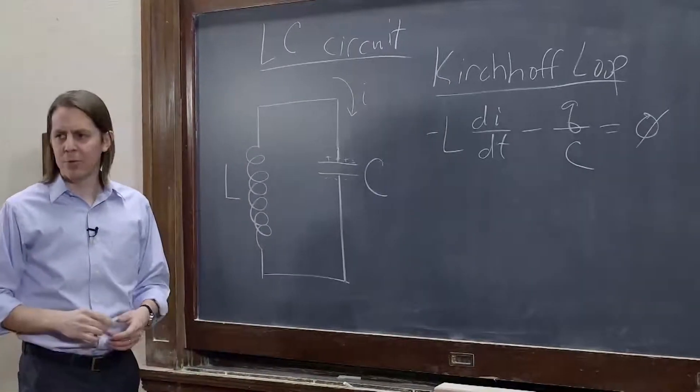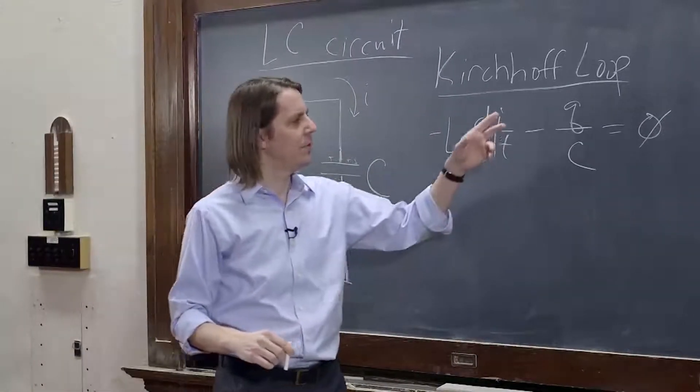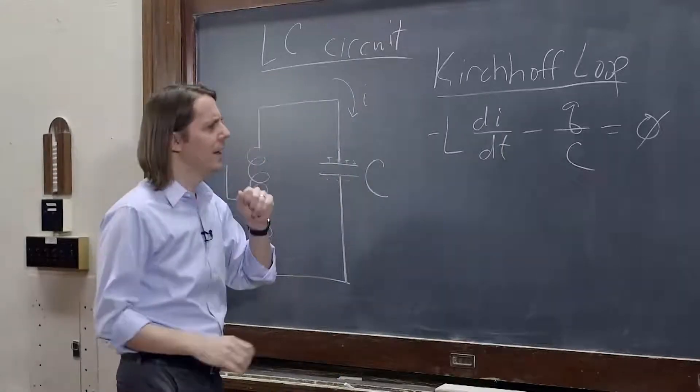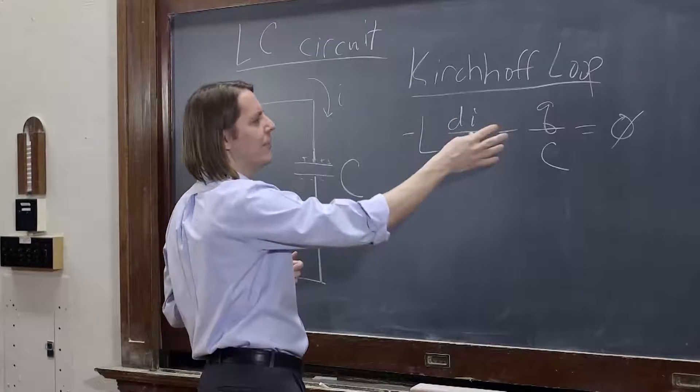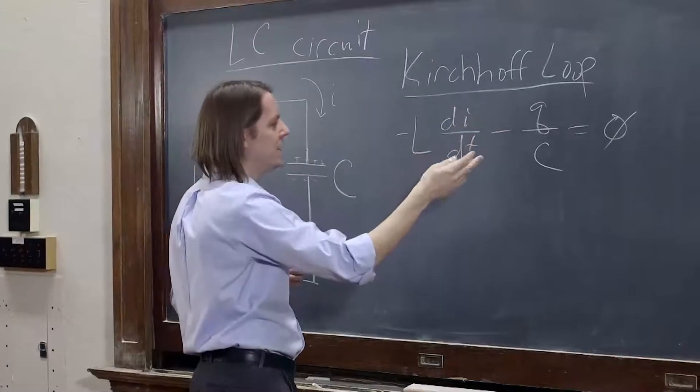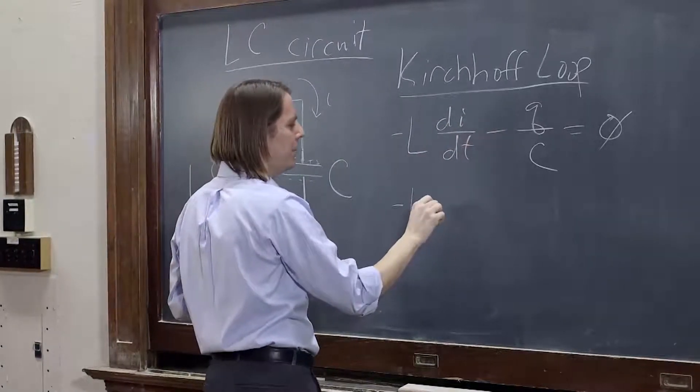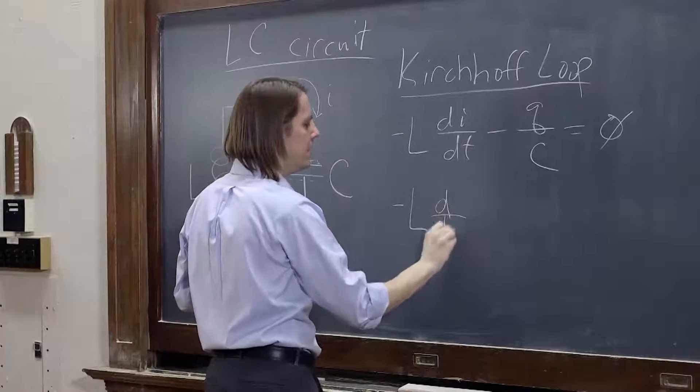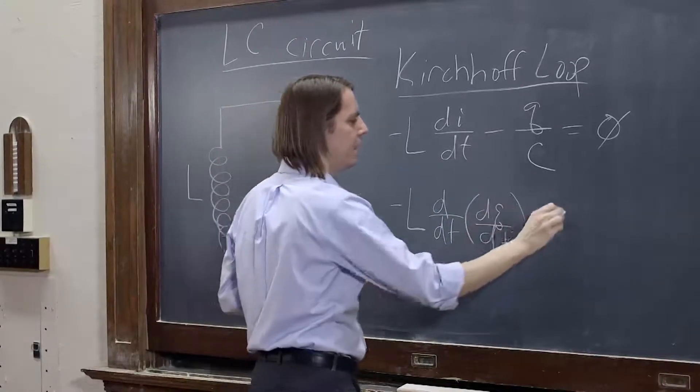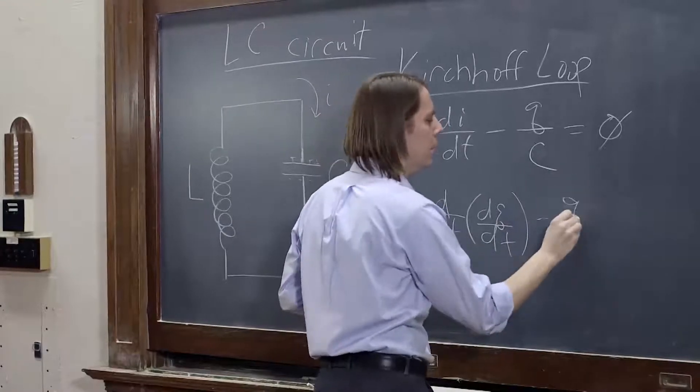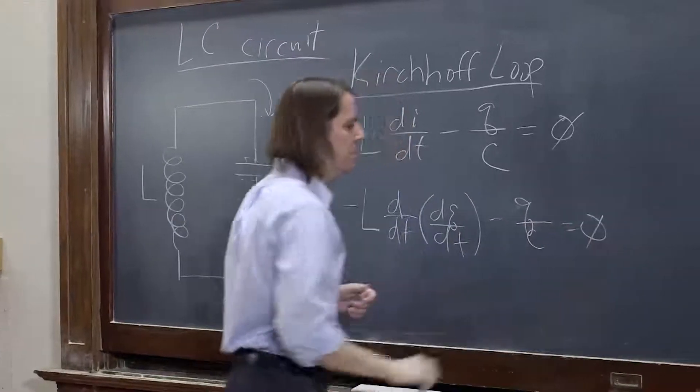So right off the bat, we're in trouble. We have current as a function of time. We have charge as a function of time. And the current is already in a derivative. What a mess. So we know the way to get from one to the other is current is dq dt. So what we have to do is write minus L d of dt of dq of dt minus q over C equals zero.